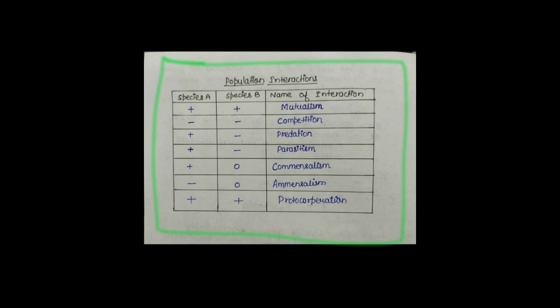First, जो Type है Population Interaction का, वो है Mutualism। Mutualism दो Species के बीच का ऐसा Association है, जिस Association के कारण दोनों Species को फायदा होता है। और ये Temporary Association नहीं है, ये एक Permanent Association है, जो की उनके Survival के लिए जरूरी होता है। इसलिए यहां दोनों के लिए Symbol Plus और Plus use किया है — दोनों Species को एक दूसरे के Interaction से फायदा हो रहा है।